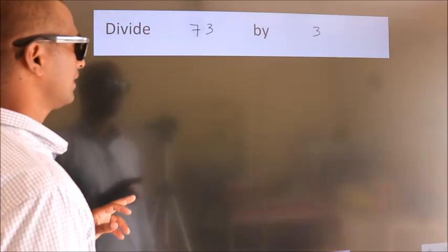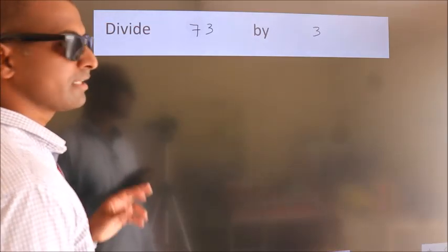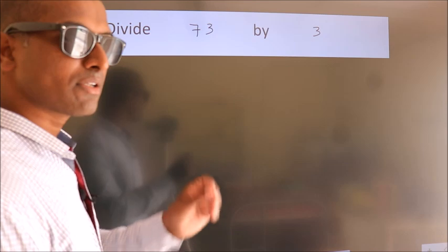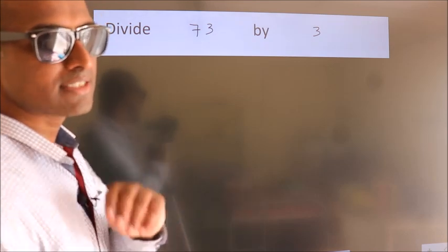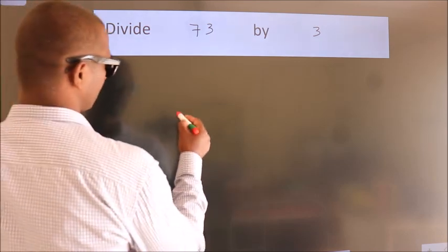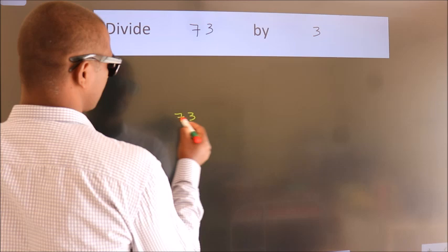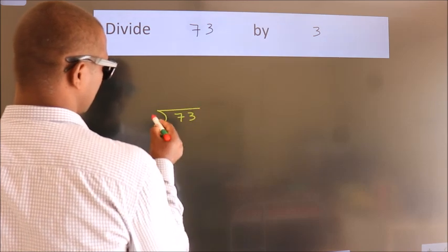Divide 73 by 3. To do this division, we should frame it in this way: 73 here, 3 here.